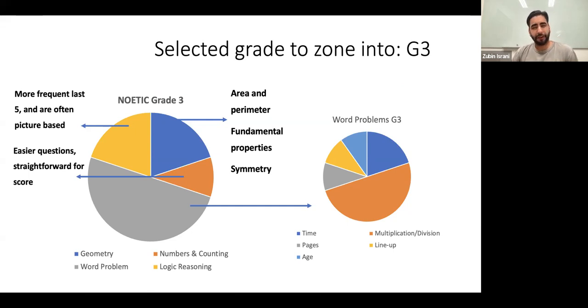Logical reasoning are most frequently the final five most difficult ones. For geometry, it's very basic area and perimeter, fundamental properties of squares, rectangles, basic geometry, and symmetry.